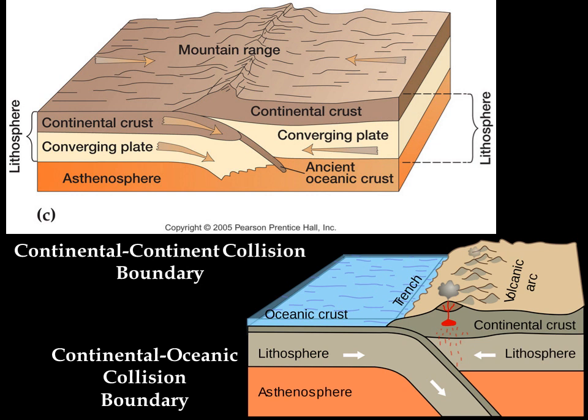Next we will look at convergent margins. Since the earth is a sphere, where there are tectonic plates moving away from one another in one portion of the world, there are plates crashing into one another in another part of the world. When plates of equal density crash into one another, they will buckle or fold, and this is where mountains are built. When continental crust crashes into continental crust, or oceanic crust collides with oceanic crust, neither will give, so they just buckle and build mountains upward.